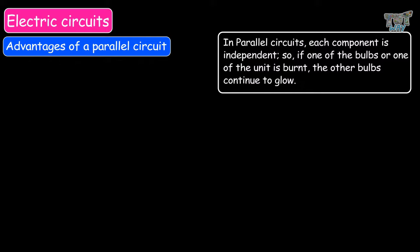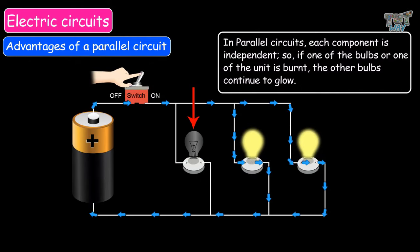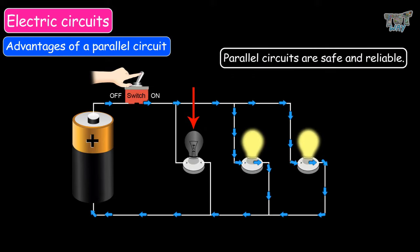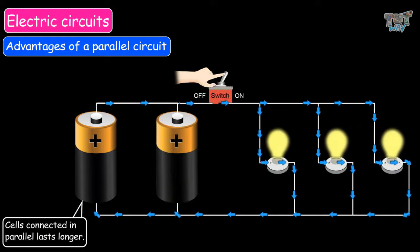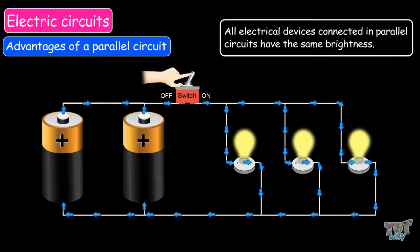Now let's learn some advantages and disadvantages of parallel circuits. In parallel circuits, each component is independent, so if one of the bulbs or units burns out, the other bulbs will continue to glow. Parallel circuits are safe and reliable. Cells connected in parallel last longer. All electrical devices connected in parallel circuits have the same brightness.